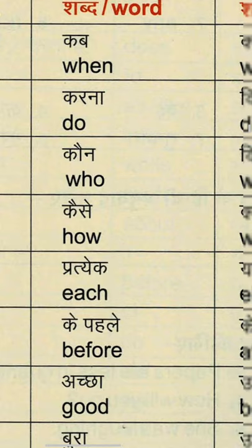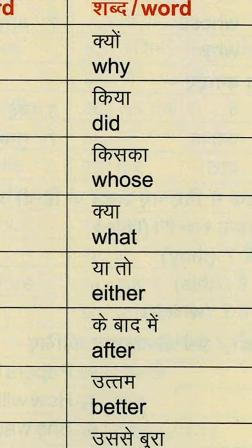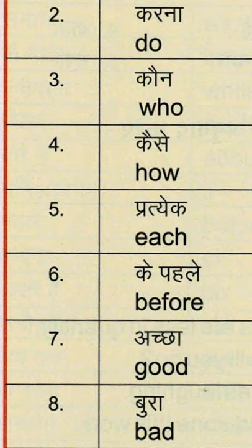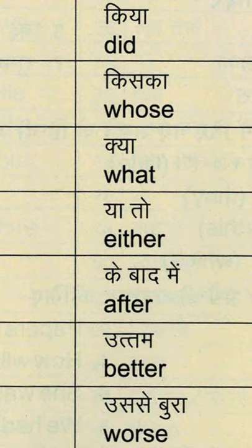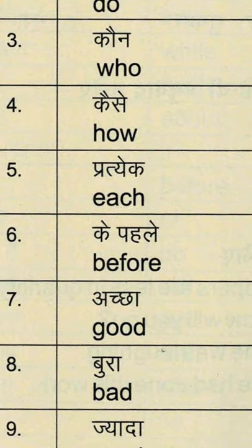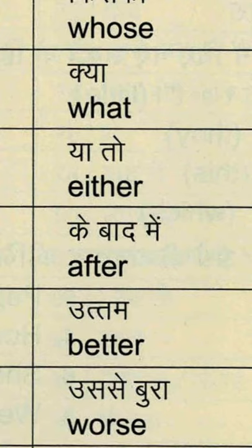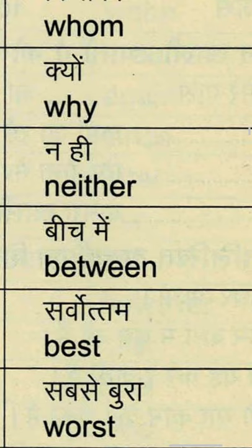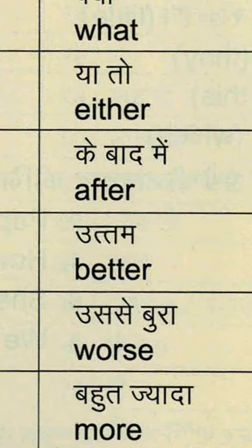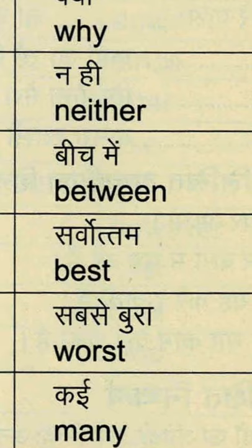Why का reason. फिर है प्रत्येक — each — E-A-C-H, each यानि प्रत्येक या हर एक। या तो — either — E-I-T-H-E-R, either means या तो। Neither — N-E-I-T-H-E-R — नहीं, ना तो। के पहले — before — B-E-F-O-R-E. के बाद में — after — A-F-T-E-R. बीच में — between — B-E-T-W-E-E-N.